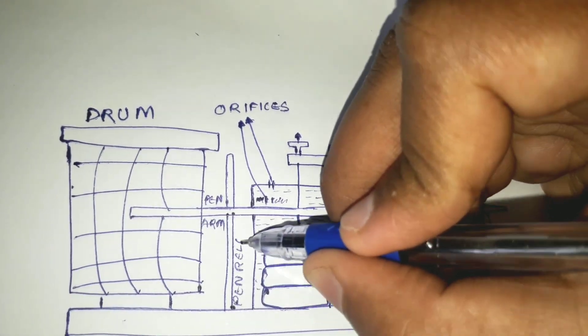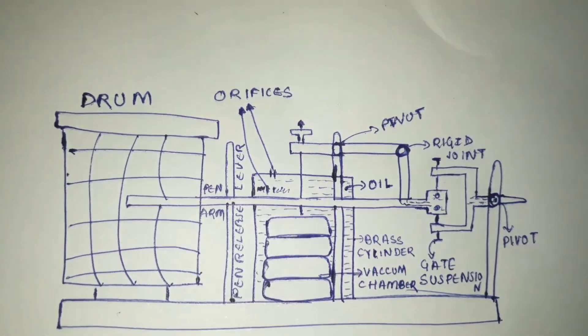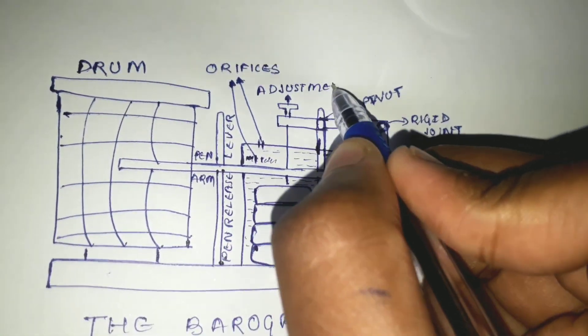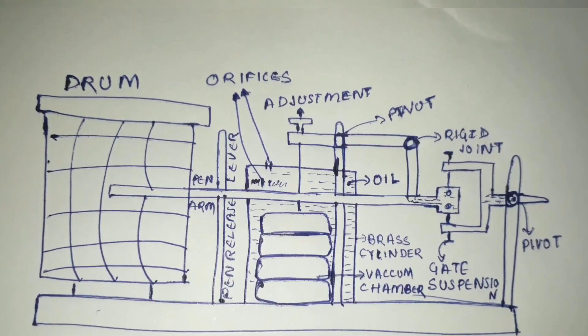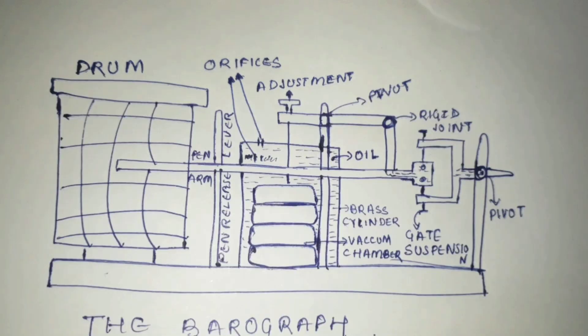As you can see in this picture, the vacuum chamber is immersed in a brass cylinder of oil. So what is the purpose of that oil? When the chamber expands, the oil is forced out of the top of the cylinder through small holes, and when the chamber contracts, the oil is sucked into the cylinder.